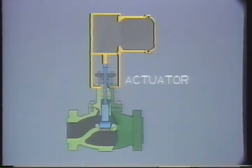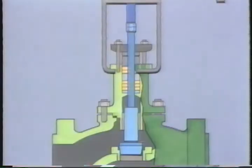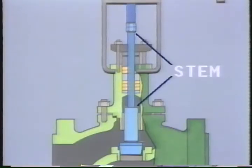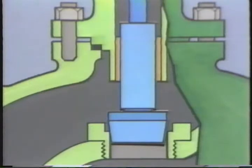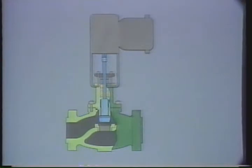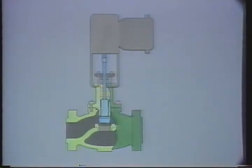The actuator provides for the automatic operation of the valve. The stem is connected directly to the actuator, and attached to the stem there's a plug. When the globe valve is operating, the stem and plug are moved up and down in response to the movement of the actuator. As the stem and plug move down, the plug approaches the circular seat.